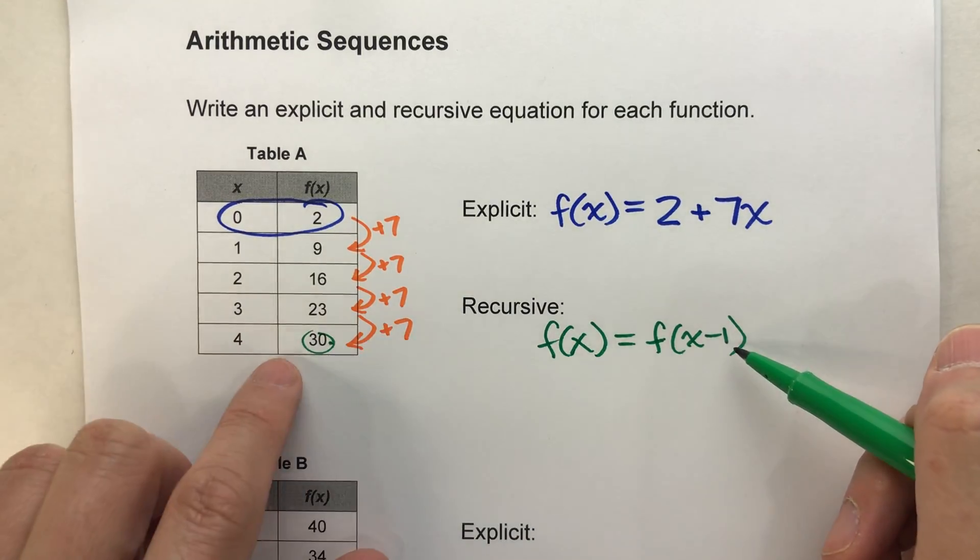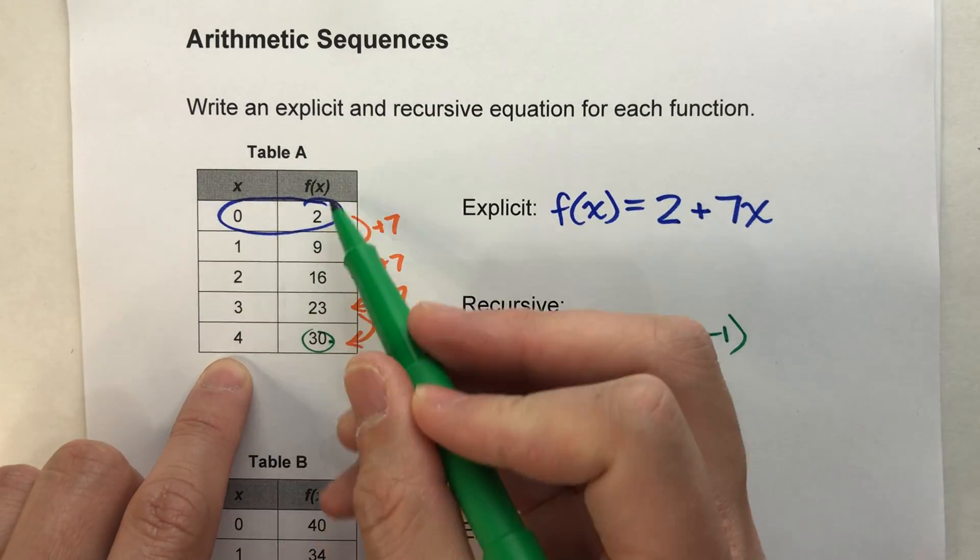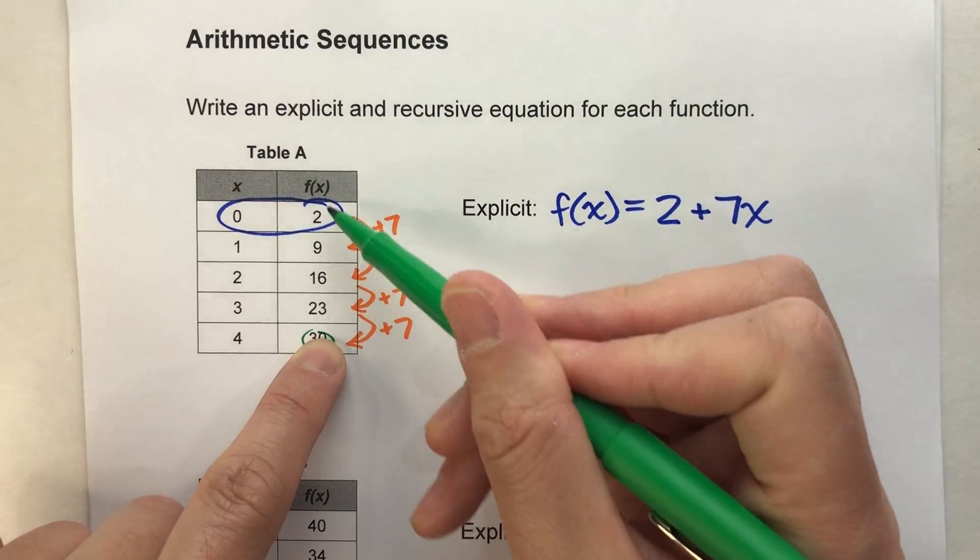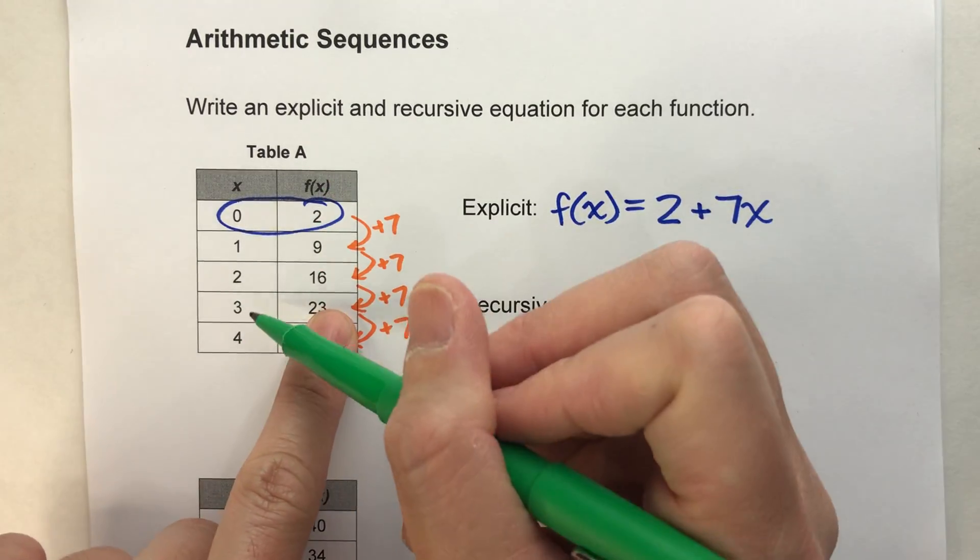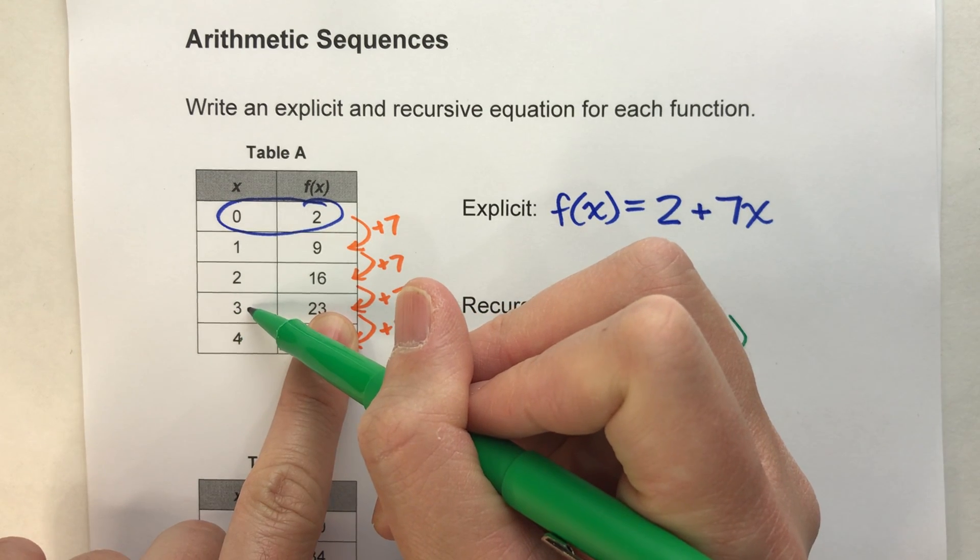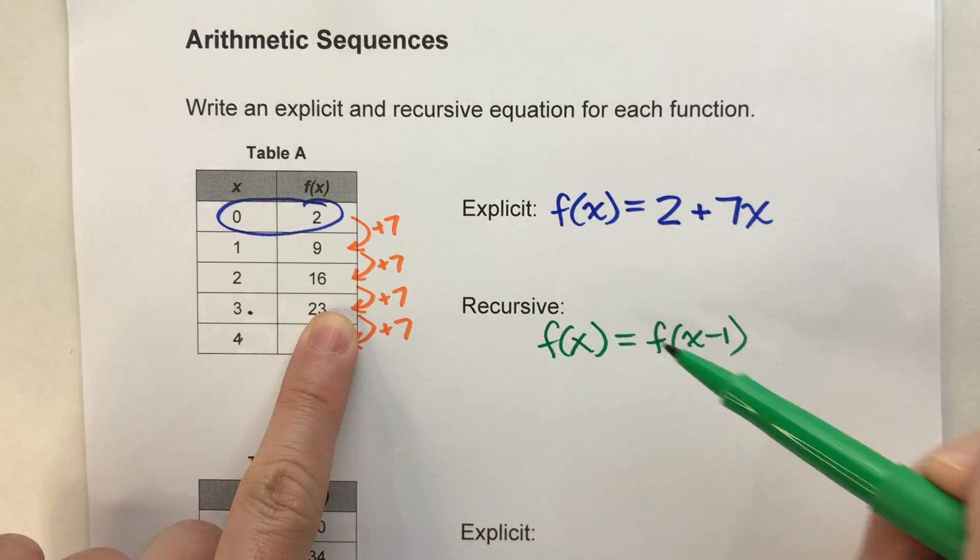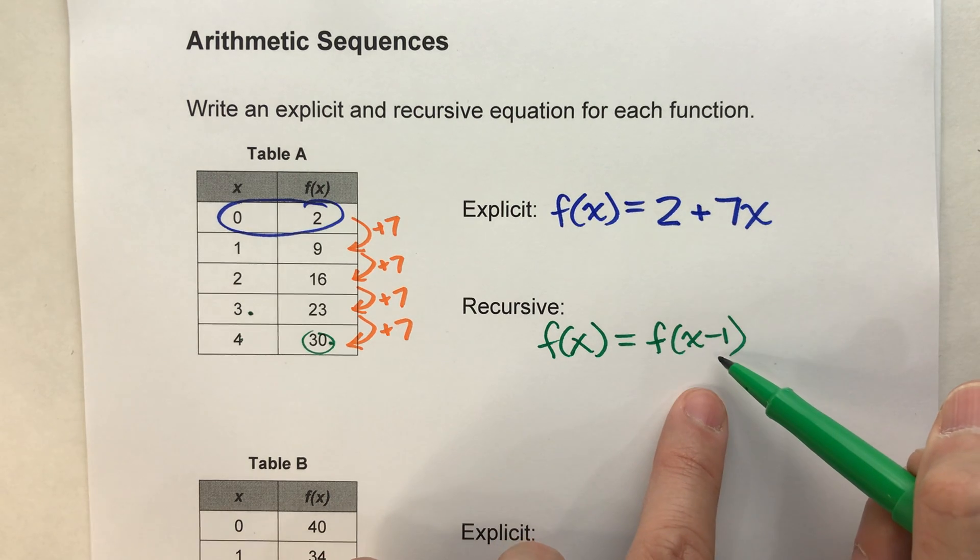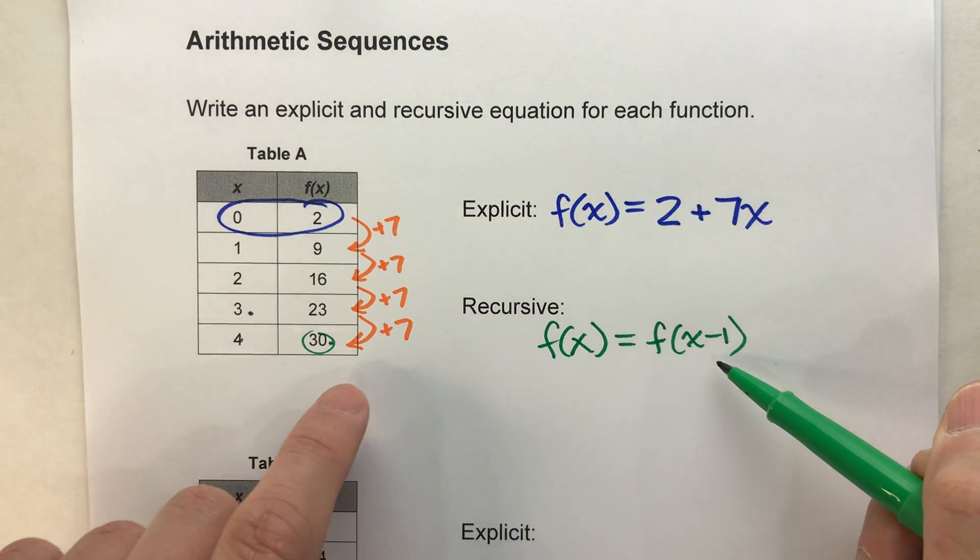Now why f of x minus 1? Well let's say we were trying to find f of 4. Then the previous value would be f of 3. In other words, we'd take the x value and subtract 1 from it. So we'd have one smaller. So this is the current one, this is the previous one.